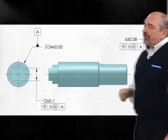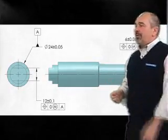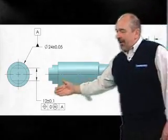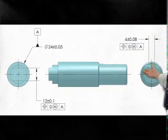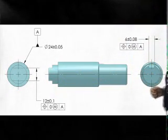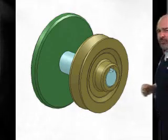The large diameter is called out as datum feature A because it rides in a bearing, and then the flats and the key seat each have a position tolerance relative to the datum axis, but there's no mention of their relationship to each other.